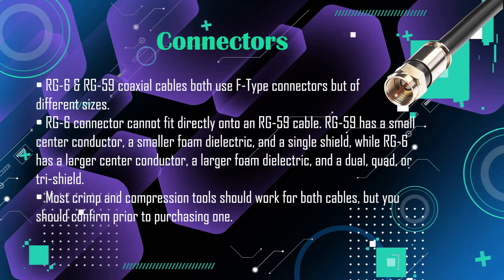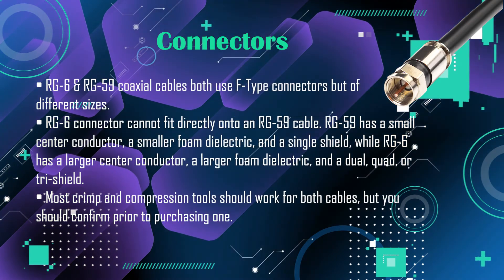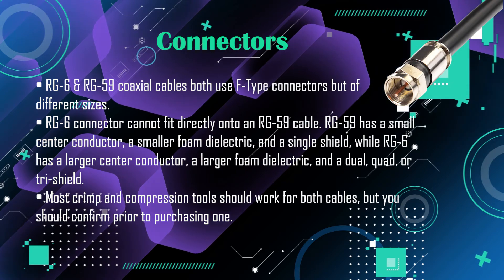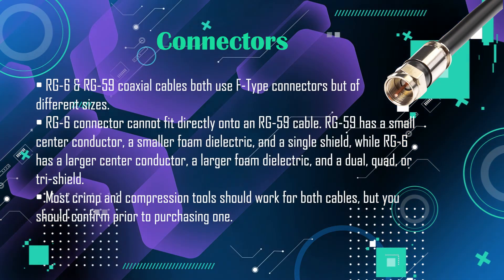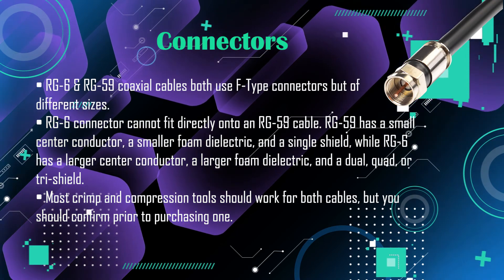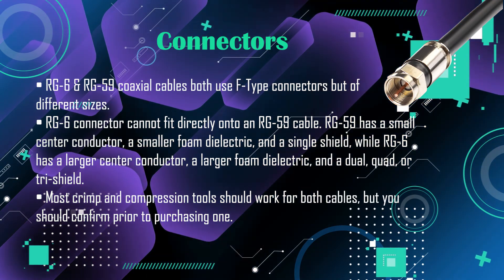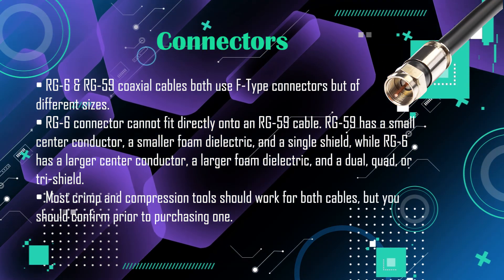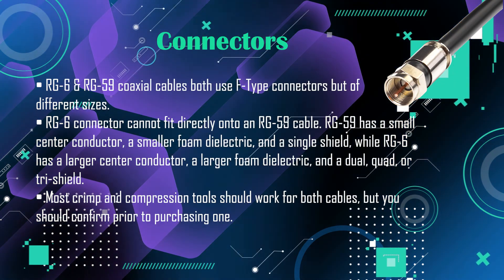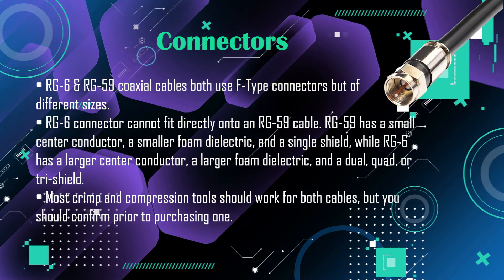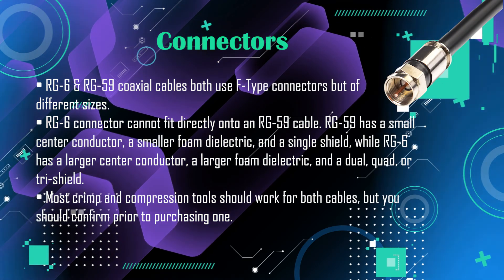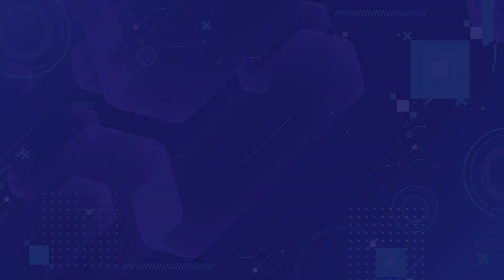Connectors: RG6 and RG59 coaxial cables both use F-type connectors, but of different sizes — an RG6 connector cannot fit directly onto an RG59 cable. RG59 has a small center conductor, a smaller foam dielectric, and a dual, quad, or tri shield. Most crimp and compression tools should work for both cables, but you should confirm prior to purchasing one.